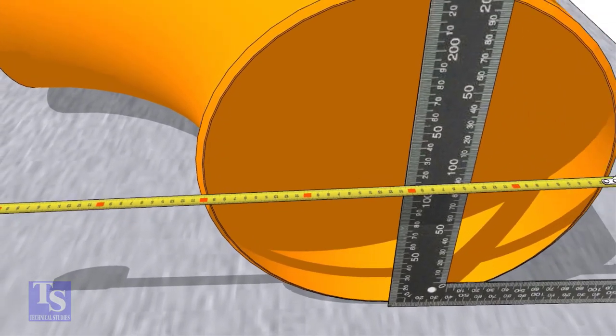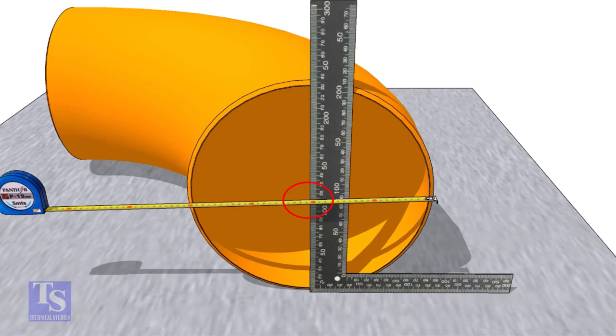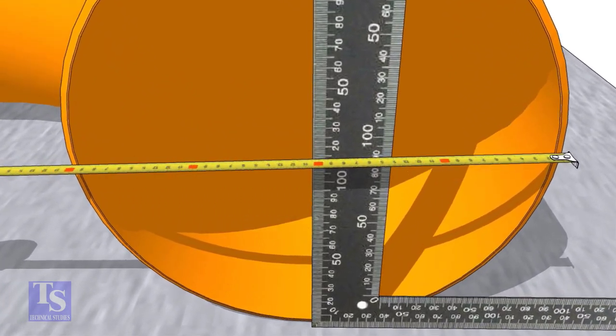Put a right angle at the center of the elbow. Make sure the distance from the edge of the elbow to the face of the right angle is equal.